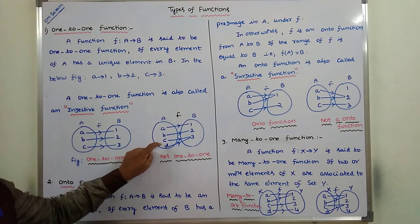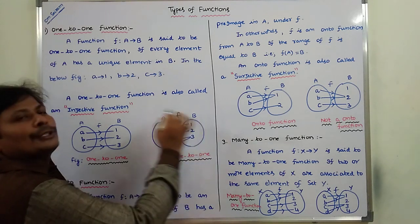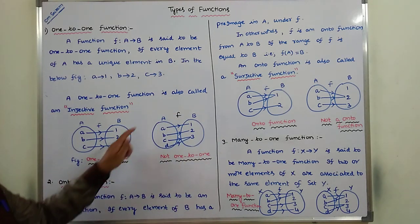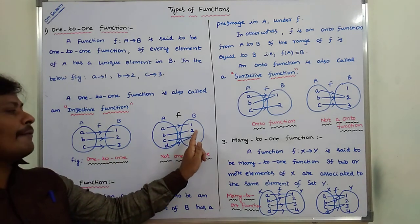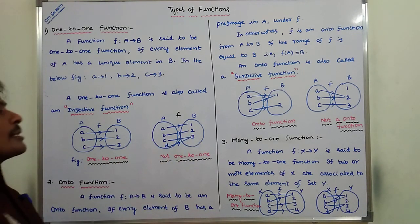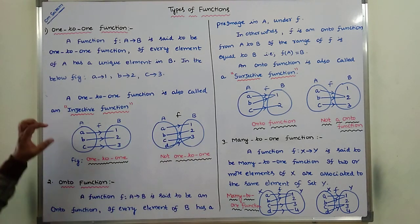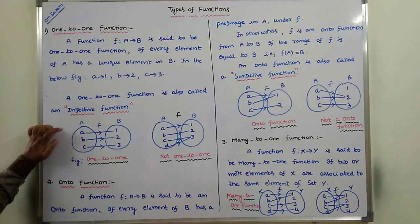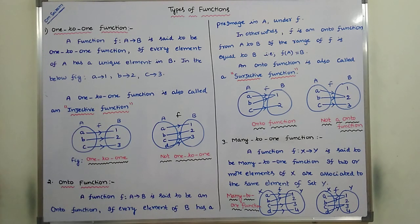So c and d are both associated with only one element in set B. Hence this is not a one-to-one function, because two or more elements of set A are associated with one element in set B. A one-to-one function requires that every element of set A has a unique element in set B.